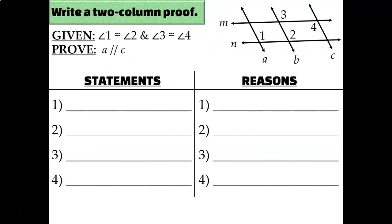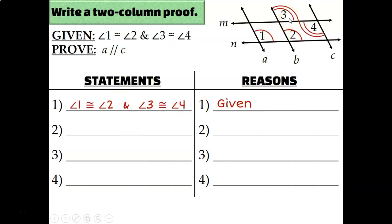Let's try one more. This time we're told that angle one and two are congruent, and that angle three and four are congruent. I'll label that on my diagram. We're trying to prove that line A is parallel to line C. On those two lines, I don't see any of my special kinds of pairs of angles, so I'm going to have to look elsewhere to figure this out.